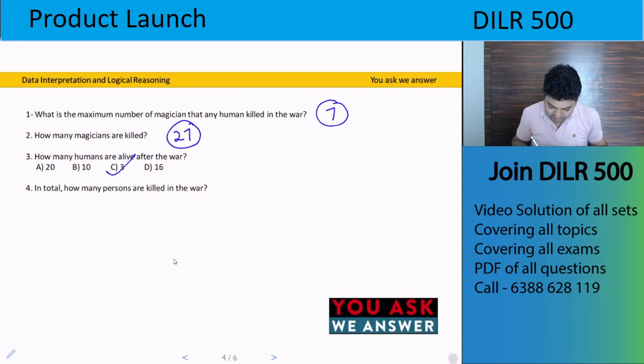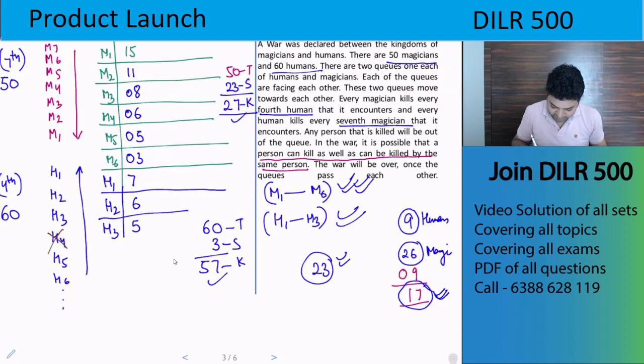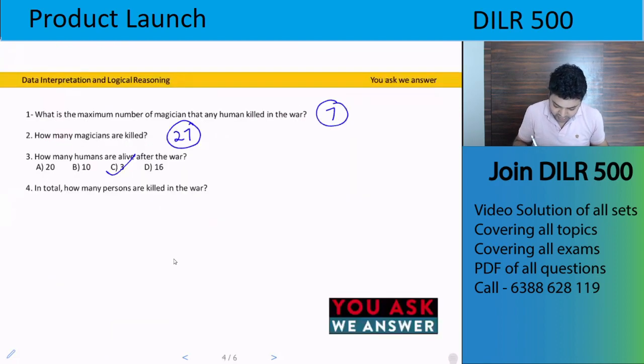In total how many persons are killed? So 27 here, 57 here, add both, 7 plus 7 is 14, 5, 6, 7 and 18. Meaning 84 persons are killed in the war.